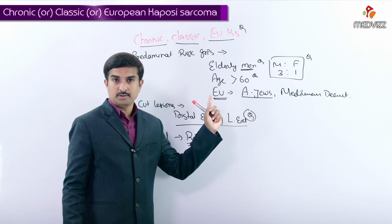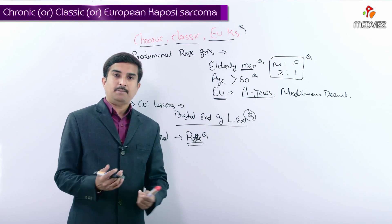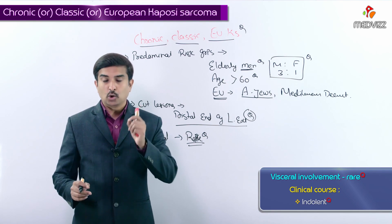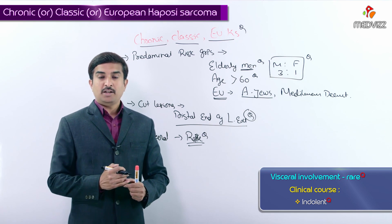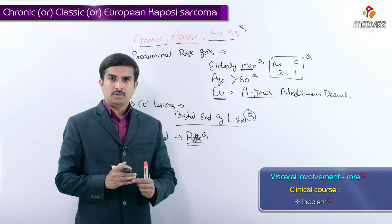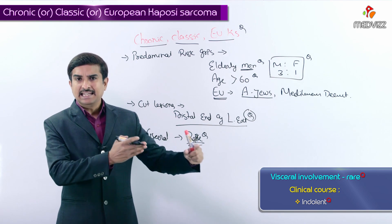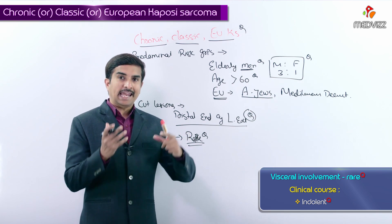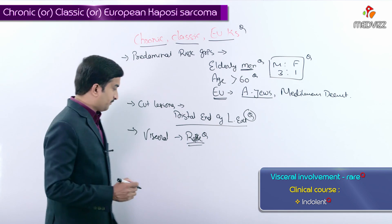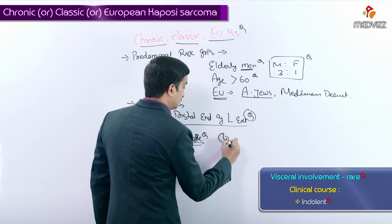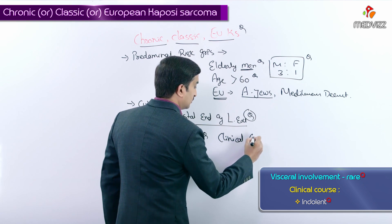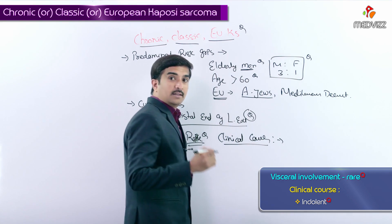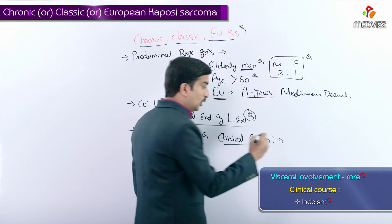The clinical course of the European type is usually indolent, meaning slow growing and not aggressive. These are often referred to as silent neoplasms.